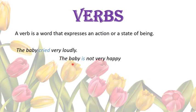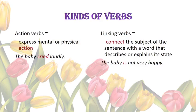In the next example, 'the baby is not very happy,' the word 'is' is a linking verb — the only verb in the sentence — used to describe the condition of the baby. Action verbs express mental or physical action, like 'the baby cried loudly.' Linking verbs connect the subject of the sentence with a word that describes or explains its state, like 'the baby is not very happy.'